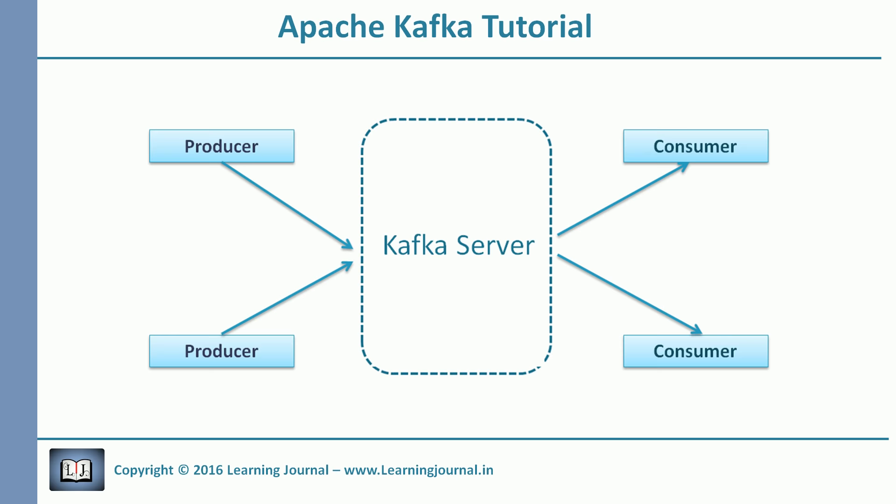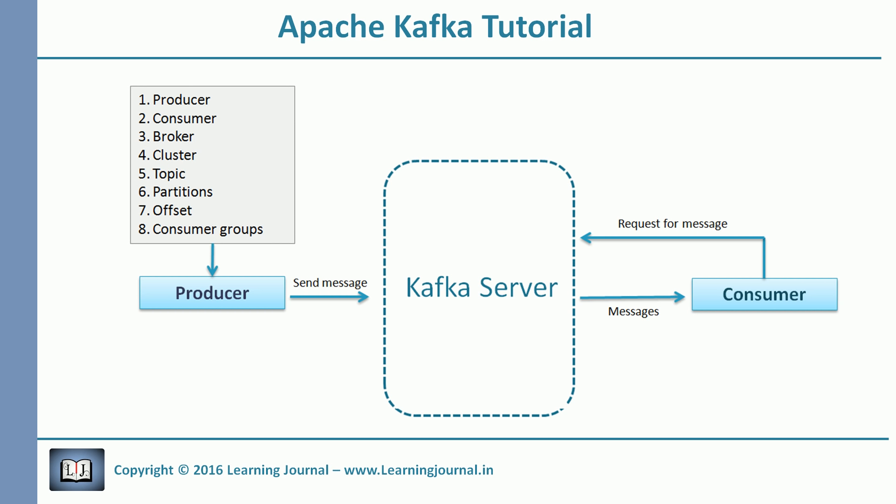Continuing on the file example: if I want to read the file sent by a producer, I will create a consumer application and request Kafka for the data. The Kafka server will send me some messages — each message being one line in this example. The client application will receive some lines, process them, and again request more messages. The client keeps requesting data from Kafka, and Kafka will keep giving message records as long as new messages are coming from the producer.